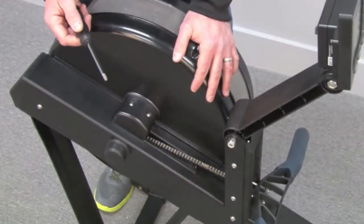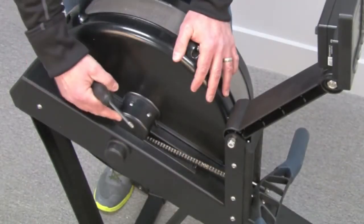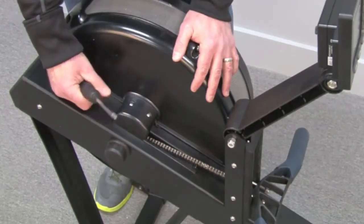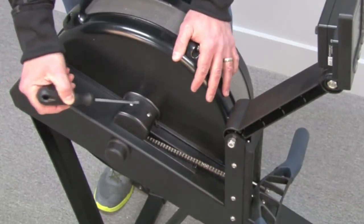The first step in replacing the generator coil is to remove the generator cover from the generator base. You'll do that by removing these two screws.